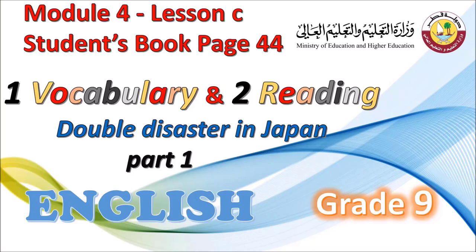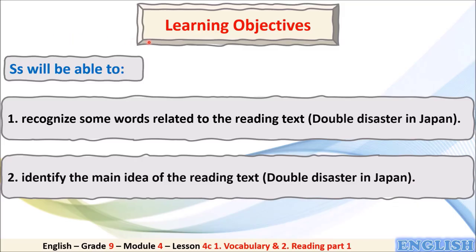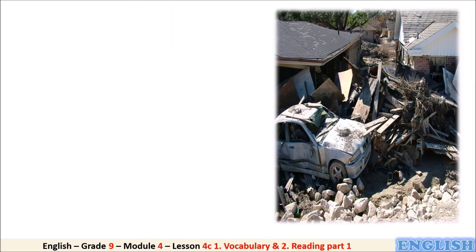Hello my dear students and welcome to today's lesson: vocabulary and reading part one, 'Double Disaster in Japan,' for grade nine, module four, lesson C, students book page 44. We have two learning objectives: first, recognize some words related to the reading text about double disaster in Japan; second, identify the main idea of the reading text about double disaster in Japan.